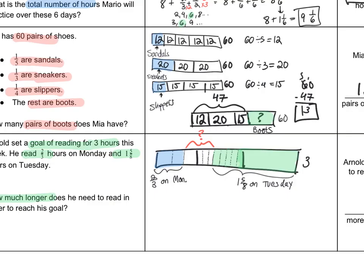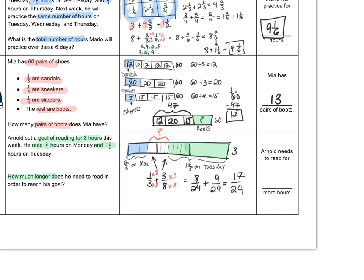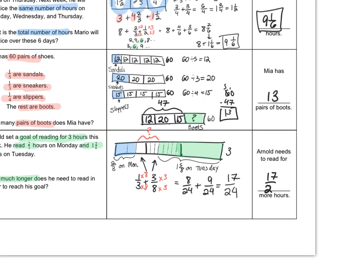So I drew another strip diagram for this one, and my strip diagram indicated to me that I would need to add one-third plus three-eighths to find the remaining amount of time that Arnold needs to read if he wants to meet his goal. So now I just need to add one-third plus three-eighths. I'm going to use twenty-four as a common denominator. Three times eight is twenty-four, and eight times three is twenty-four. So now when I multiply my numerators and denominators, I can rewrite this as eight twenty-fourths plus nine twenty-fourths, which is seventeen twenty-fourths. That's how many more hours he needs to read.